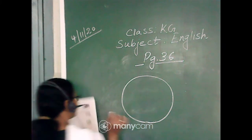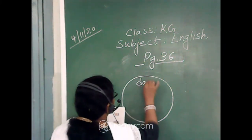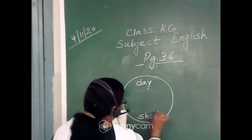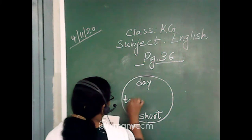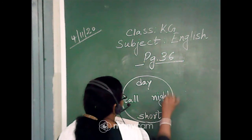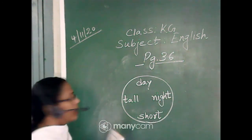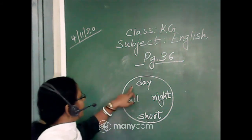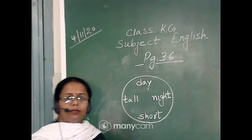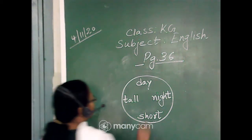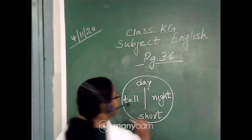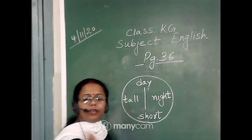Okay? So here comes day and short. Again, here we are getting the word tall and night. Okay? Day, tall, night, short. Right? So let us join day and short. Really? I will join day and short. Opposite of day is short. No?